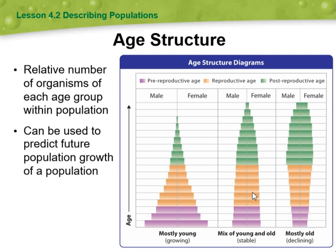Moving to the age structure — technically, age structure refers to the distribution of different age groups within a population. It helps us understand the proportion of individuals in different age categories such as children, working-age adults, and elderly individuals. Age structure is important for studying population dynamics, planning for healthcare and social services, and projecting future population trends.